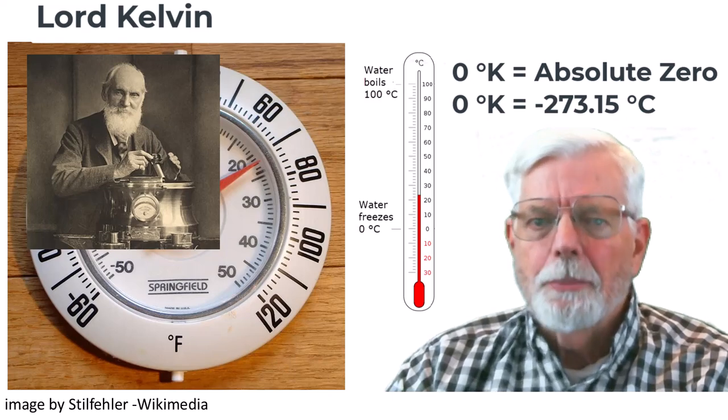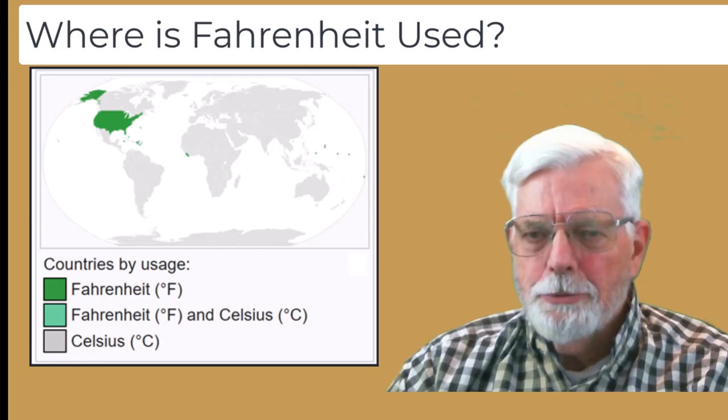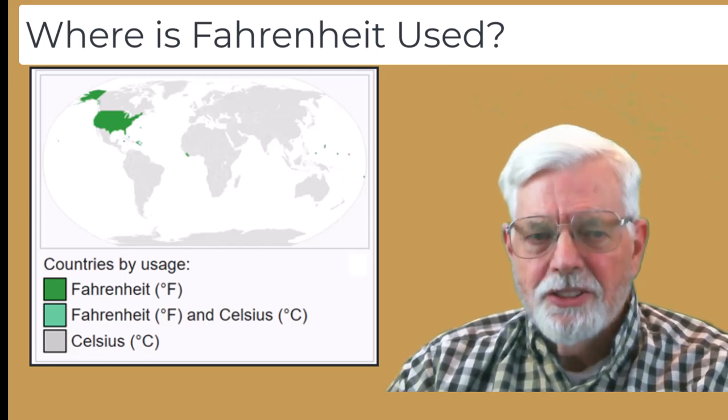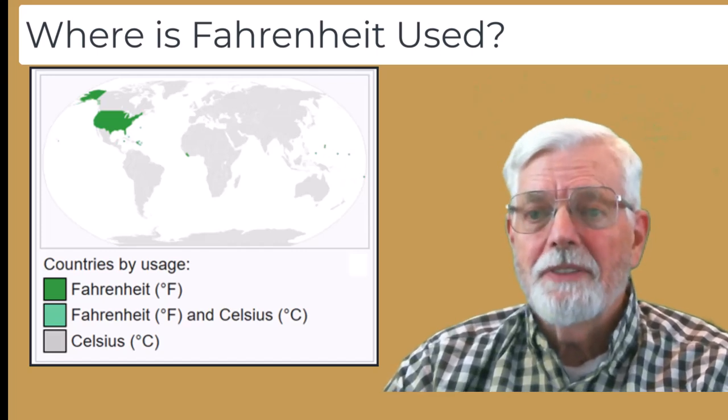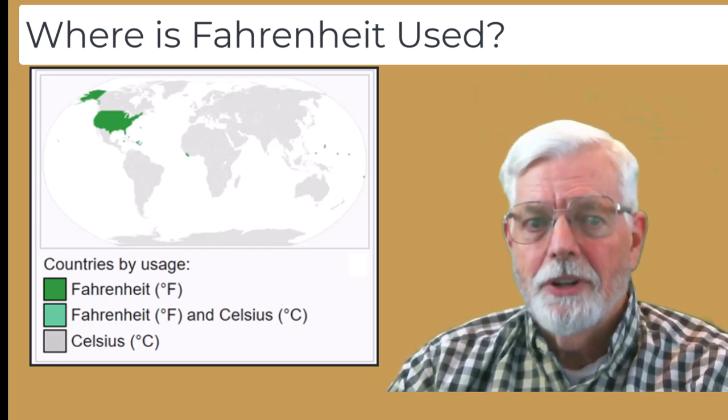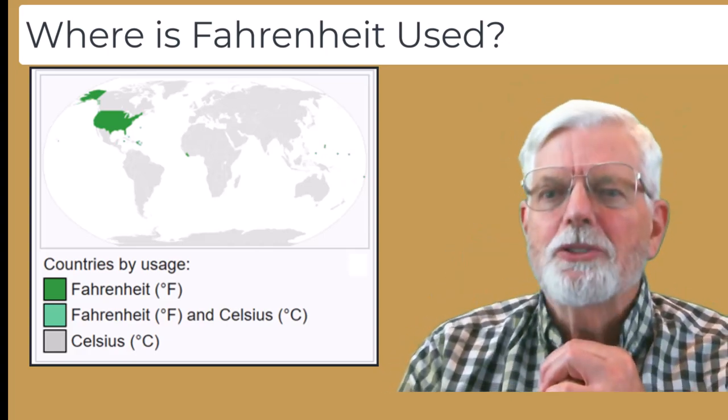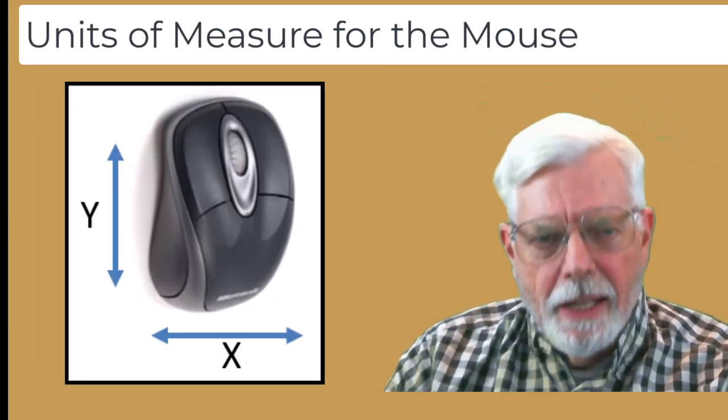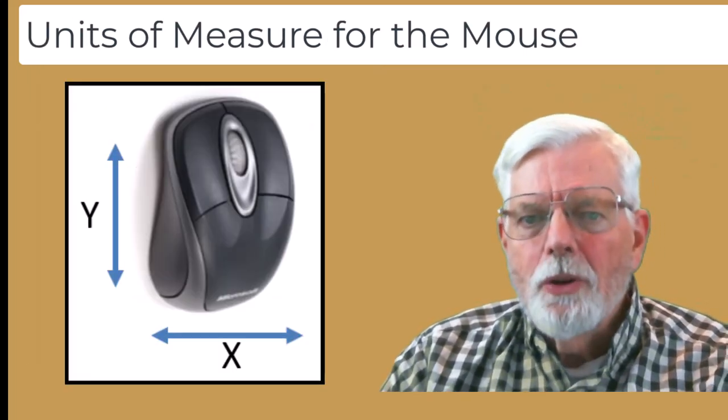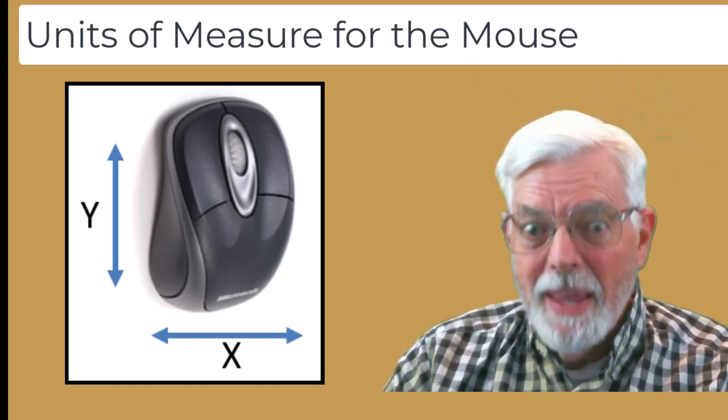So, he got something named after him. While most of the world uses temperatures measured in Celsius, the United States still uses the Fahrenheit scale, except for scientific research where Celsius or Kelvin is used. Maybe, someday, I will be as famous as Mickey Mouse and some units of measure will be named after me. Did you know the X and Y units of measurement for the motion of a computer mouse are called Mickey's?